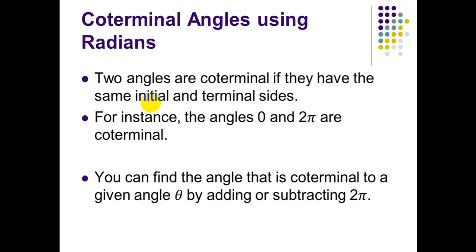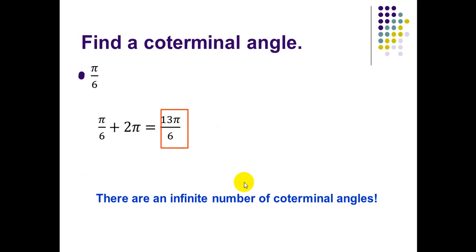Coterminal angles using radians: we said before we add or subtract one revolution. One revolution in degrees equals 360°; here one revolution is equivalent to 2π. To find an angle coterminal to a given angle theta, we add or subtract 2π. Find the coterminal angle for π/6: π/6 plus 2π equals 13π/6, which is a coterminal angle.